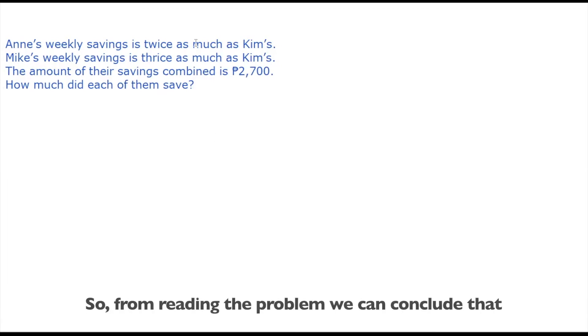So from reading the problem, we can conclude that there are three characters in the problem. The first character or the first person involved is Ann. The next person is Kim and then the last one is Mike.